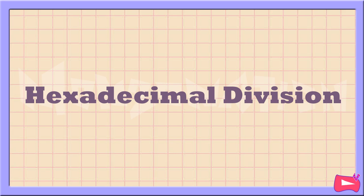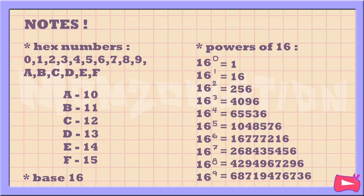This video is about how to divide hexadecimal numbers. Hexadecimal is regarded as base 16. The hexadecimal values are 0 to 9 and A to F, where A to F represents the values 10 to 15. The hexadecimal number system is based on the powers of 16.